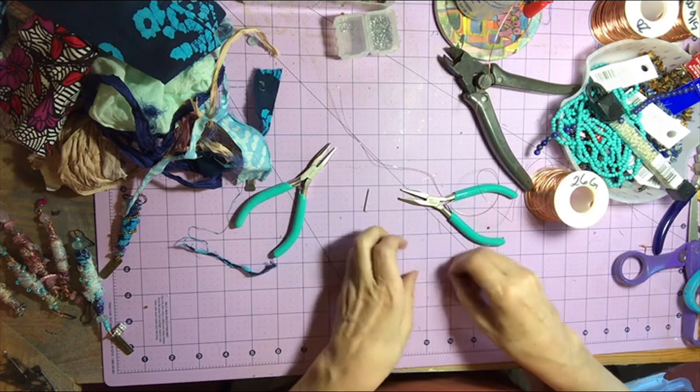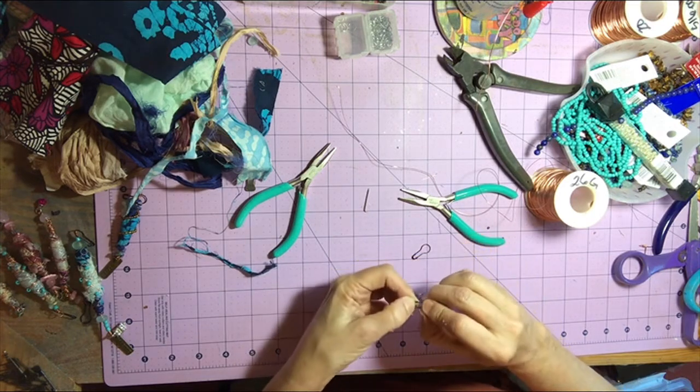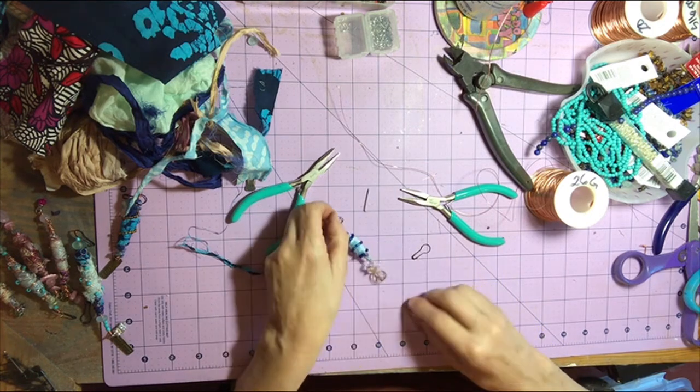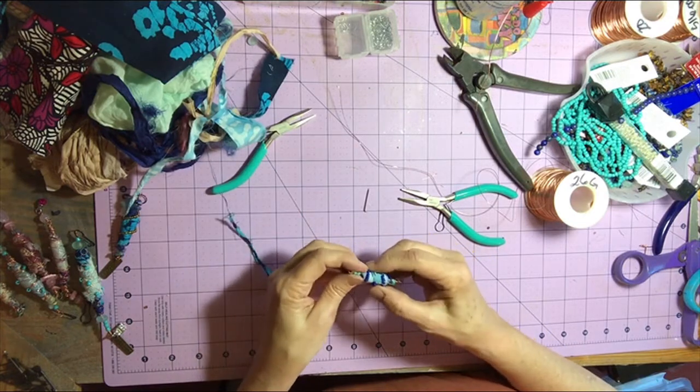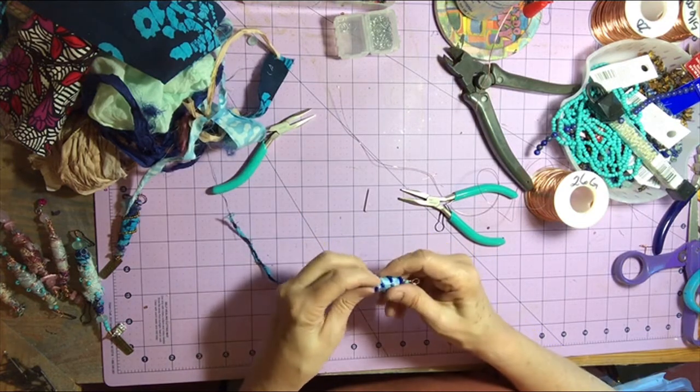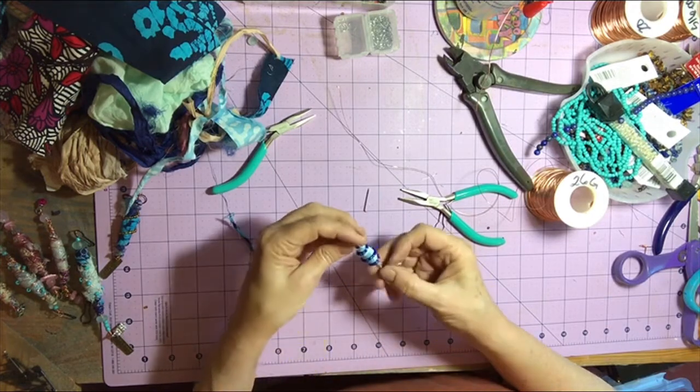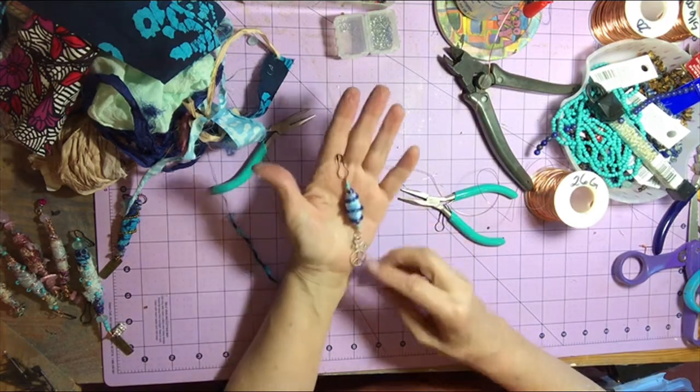And now I'm going to put a ball pin on the other end which will give me the mechanism to secure it to the edge of the book, to the edge of a page, or to whatever I choose to use this boho bead on. And that completes it.